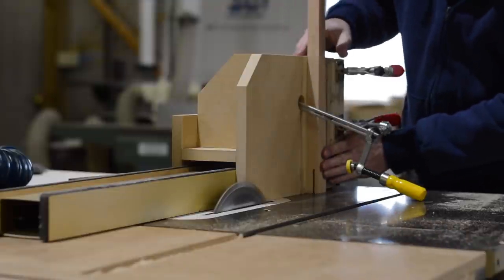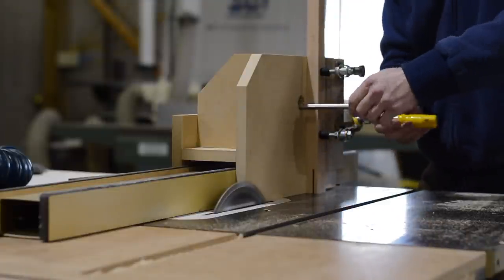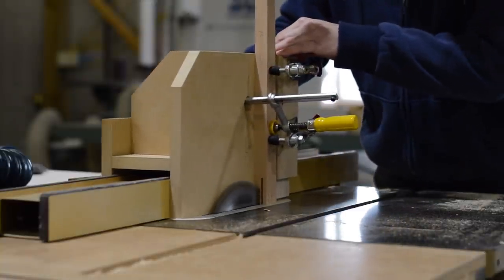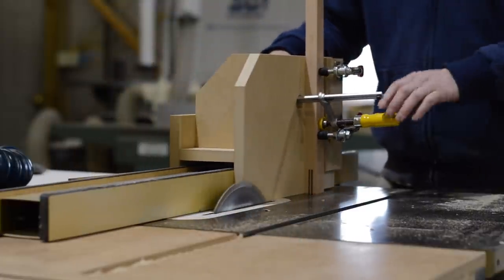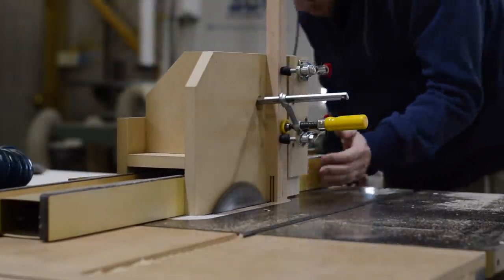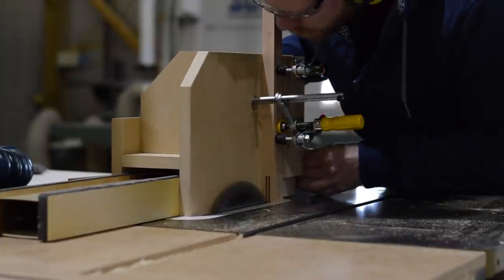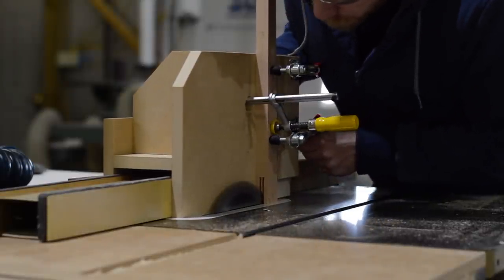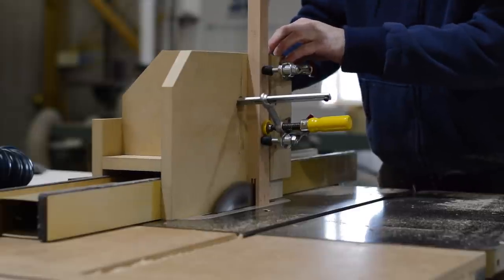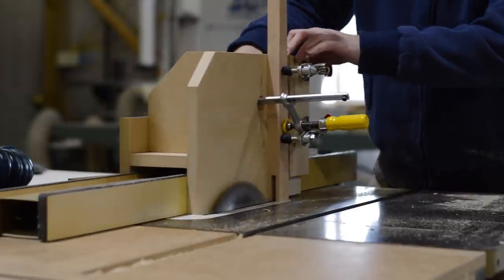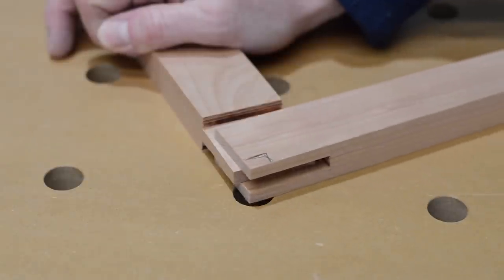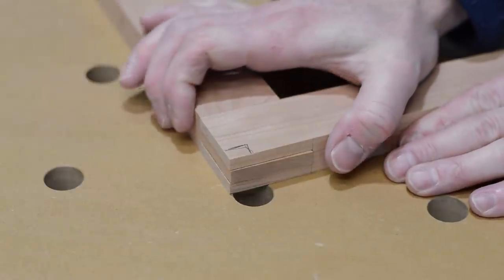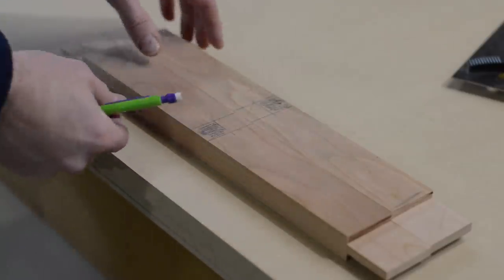After cutting the mortises on all four legs, the last step is just to make a small fence adjustment and clean out the waste in between. It's been my experience when cutting bridle joints, you don't want to fit too tight. It will actually cause that mortise to open up a little bit if you have to force the pieces together.